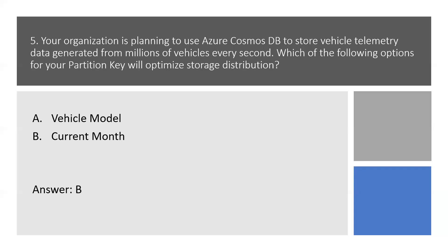Question 5. Your organization is planning to use Azure Cosmos Database to store vehicle telemetry data generated from millions of vehicles every second. Which of the following options for your partition key will optimize storage distribution? Option A: vehicle model. Option B: current month. Here is the right answer: Option B. Auto manufacturers have transactions occurring throughout the year. This option will create a more balanced distribution of storage across partition key values using date range.